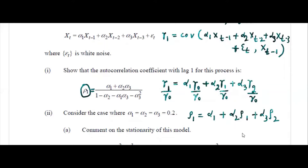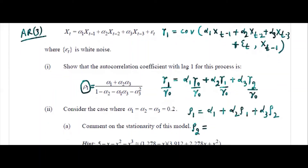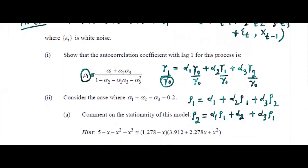If you use the Yule-Walker equation to write another equation for rho 2 — since this is AR3 — you compute with Xt minus 2. You'll get gamma 2, and from gamma 2 to rho 2. Remember the Yule-Walker equation starting with lag 2: you get alpha 1 times rho 1, alpha 2 times gamma 0 which cancels, plus alpha 3 times rho 1, giving rho 2. So now we have two equations and two unknowns.